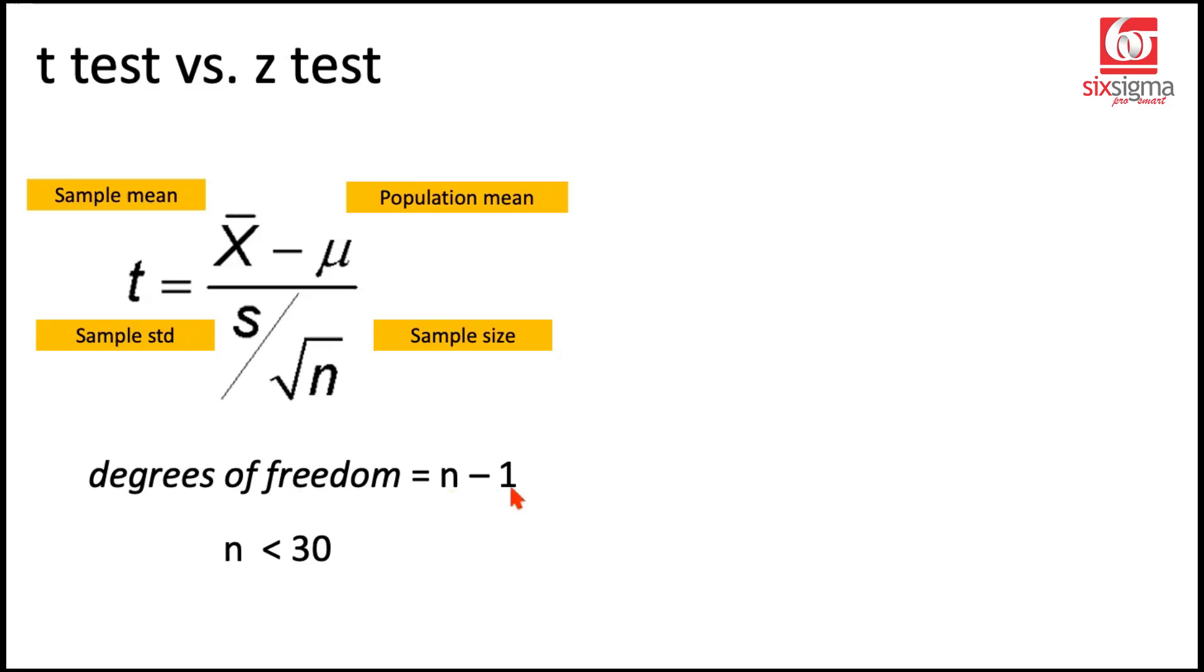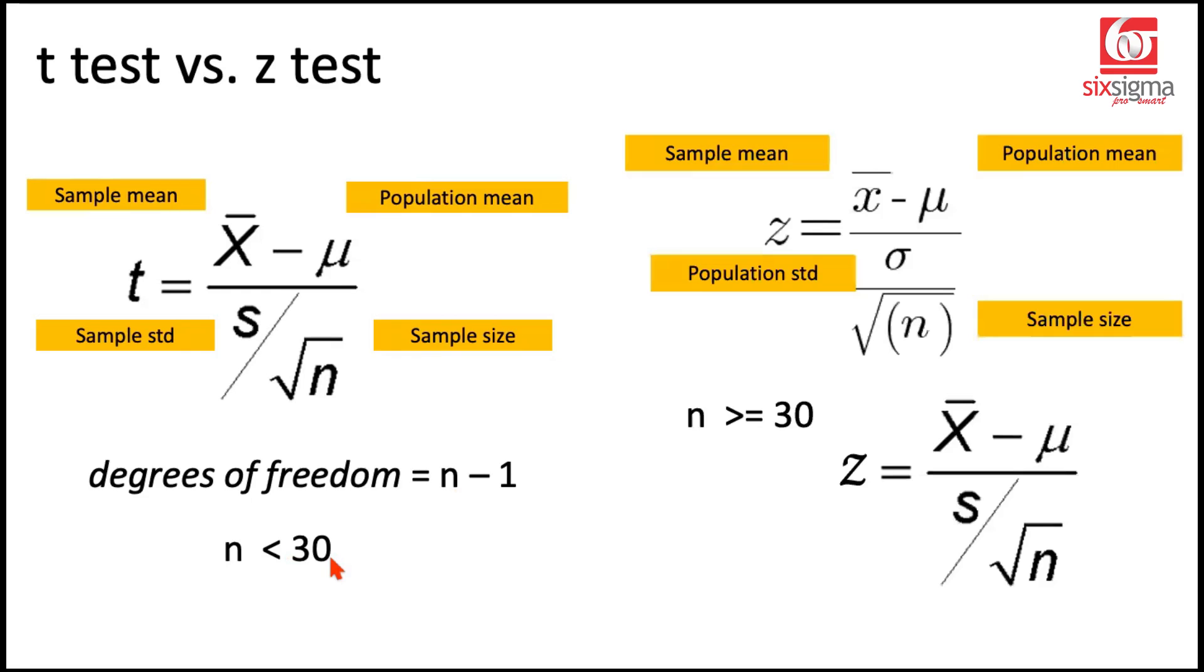In this case, it is n minus 1, where n is the sample size. And in general, for t-test, n is less than 30. How did the z-statistic look like? Z-statistic was like this. So the major difference here is that in case of a z-statistic, you were using the population standard deviation. One of the main assumptions was that you already know it. But in case of a t-statistic, you don't have population standard deviation. You only work with the samples.